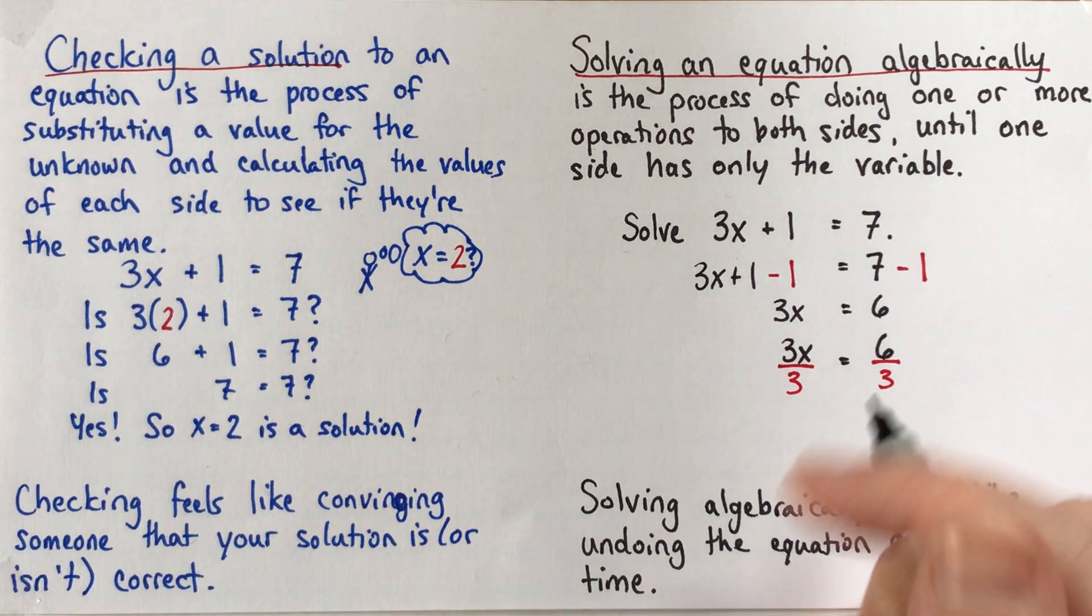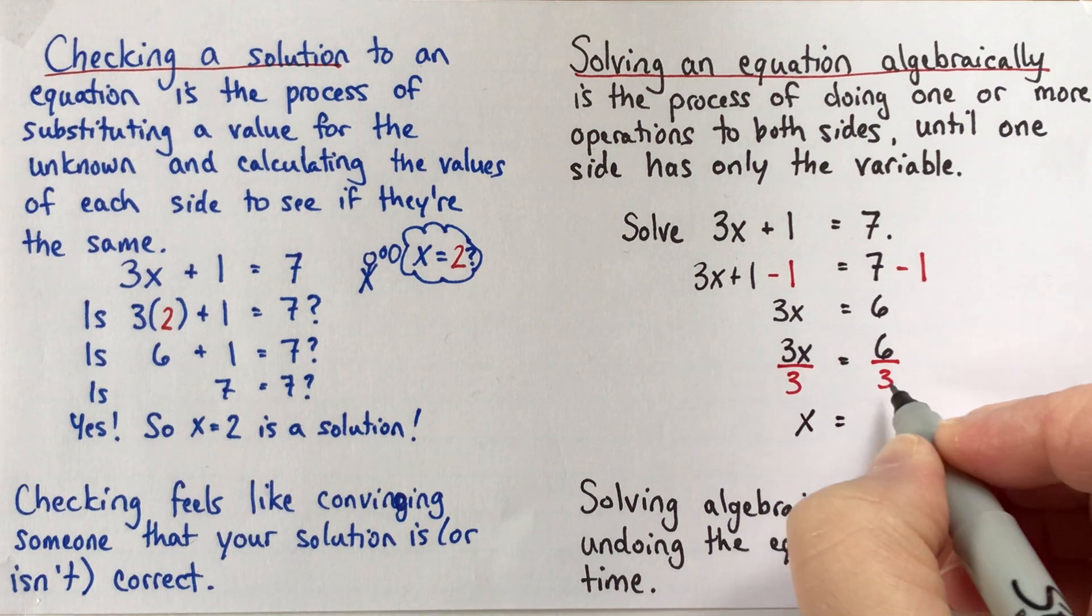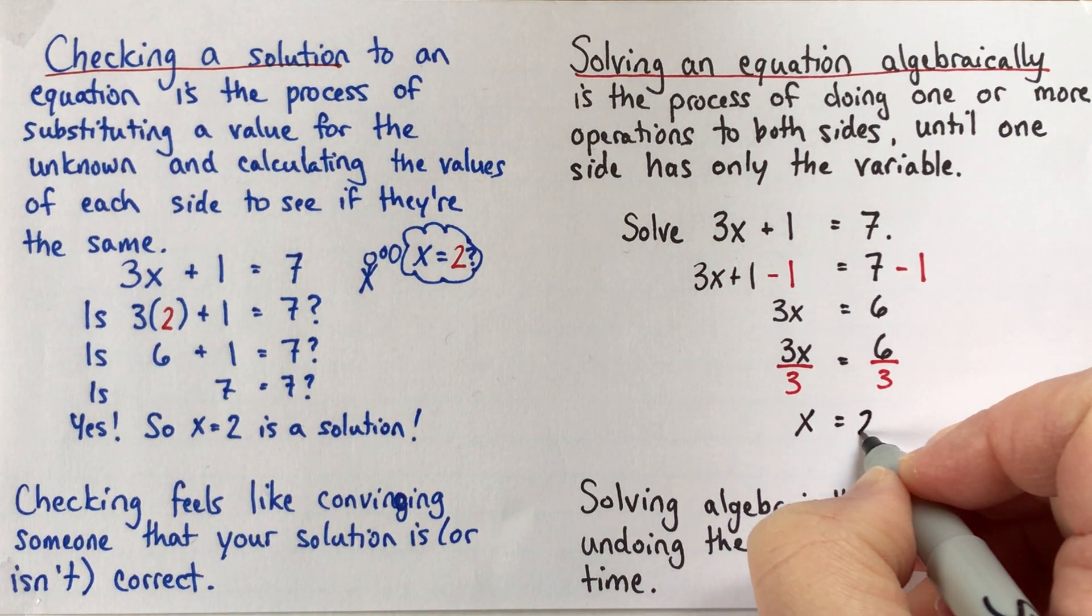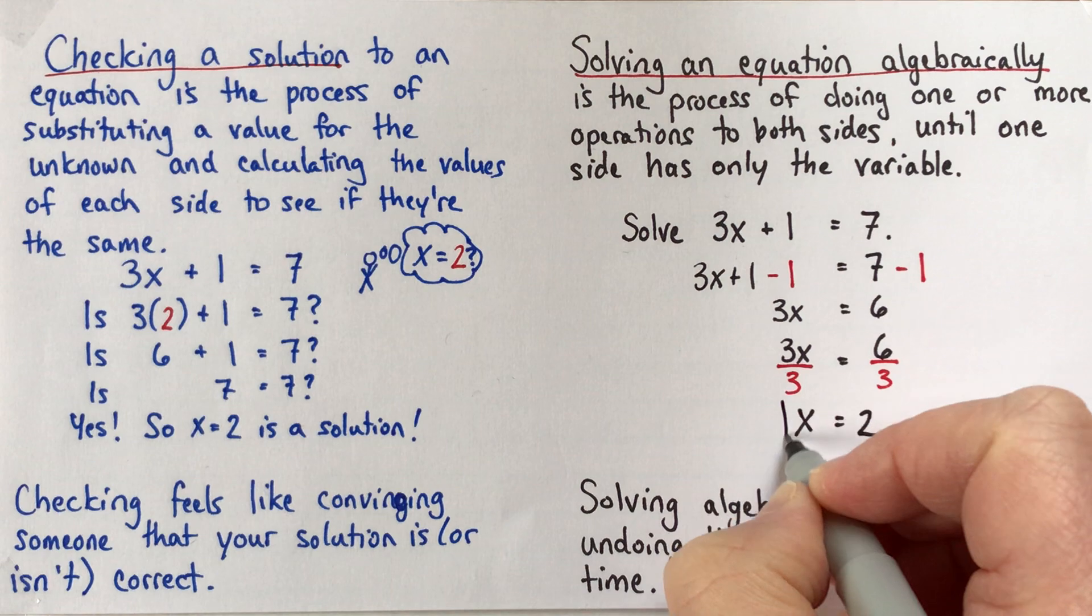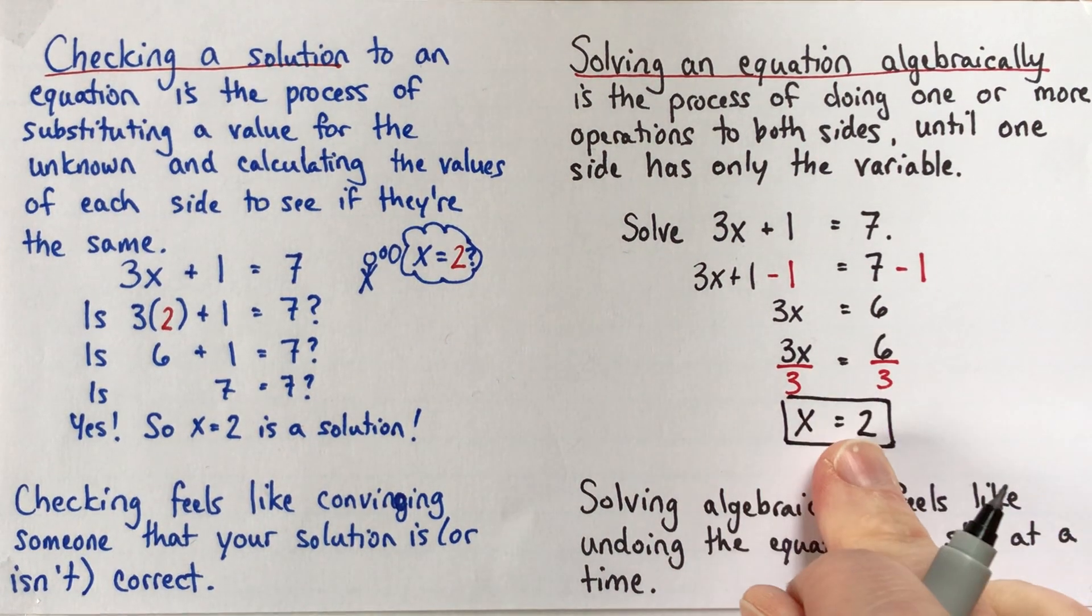And that leaves us 3x divided by 3 is x. And 6 divided by 3 is 2.